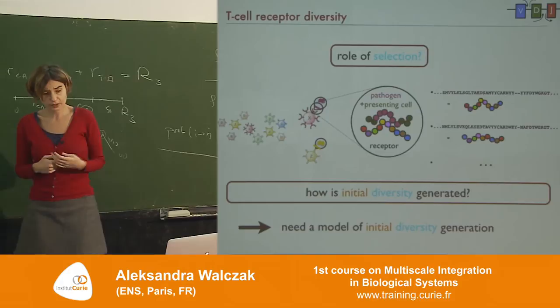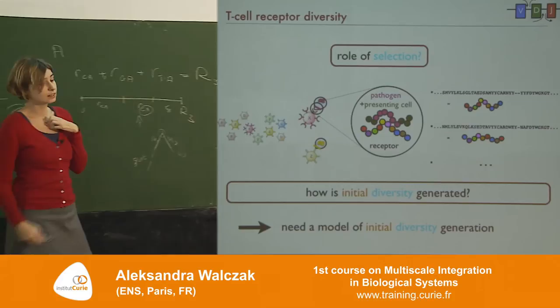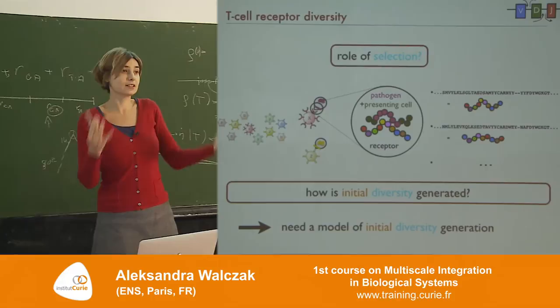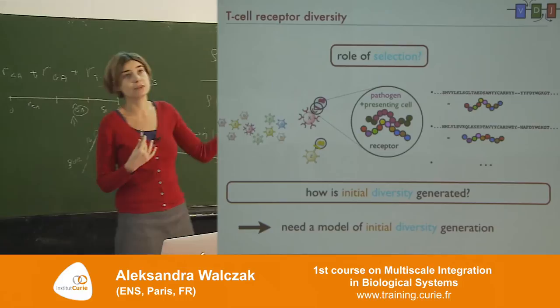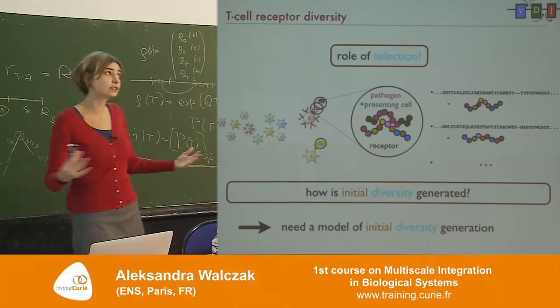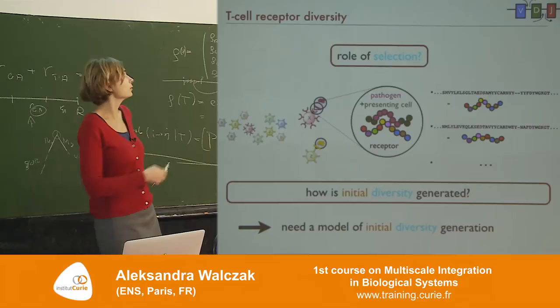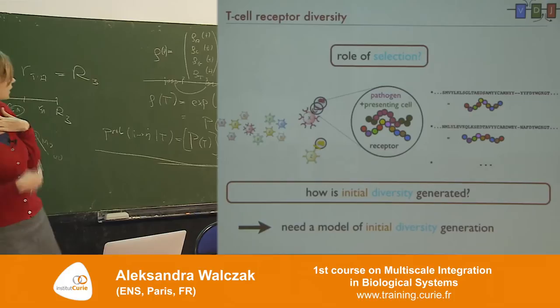If we're trying to understand something quantitative like this probability distribution of abundance, and thinking of an evolutionary model with new receptors, production, novelty, and selection, we'd like to understand the initial distribution that is generated — basically the source. The VDJ recombination process is constantly producing new sequences, and we'd like to know what is the initial diversity of generated protein sequences, so that we can then see how selection acts on it and leads to the observed repertoire. The first thing we need is a model of initial diversity.